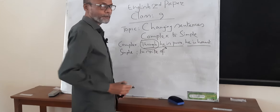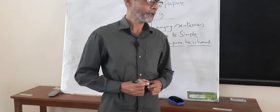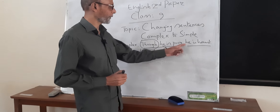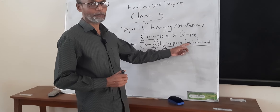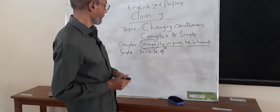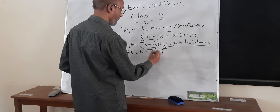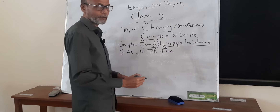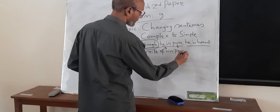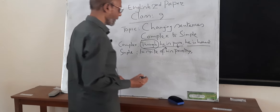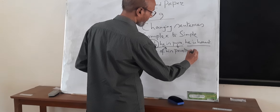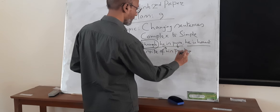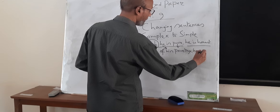Now look here — there is a subject. I have told you that for a simple sentence you will have just one subject and one finite verb. So we take the subject as possessive and change it: 'in spite of his' — and change the adjective 'poor' into the noun 'poverty'. So: 'in spite of his poverty, he is honest'.